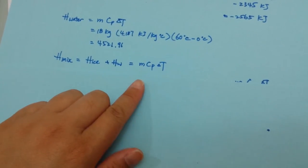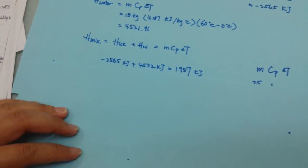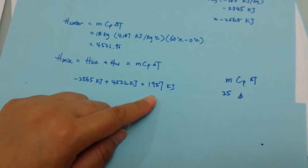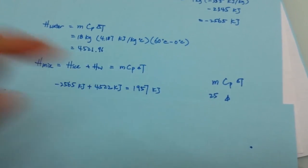And enthalpy of ice plus enthalpy of water, we are going to get positive 1,957 kilojoules.